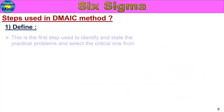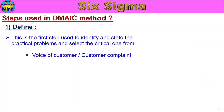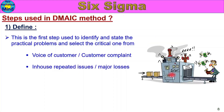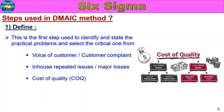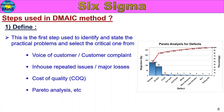First step: Define. You should identify and state the practical problems and select the critical one. In this step, you identify all the problems and select one critical problem. Sources include: voice of customer or customer complaint, in-house repeated issues or major losses, cost of quality (COQ), and Pareto analysis. These are the main sources for identifying a critical problem in this step.